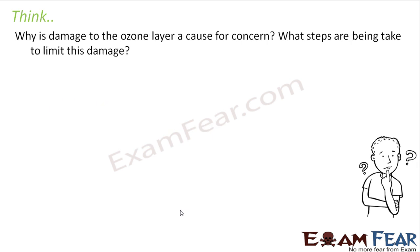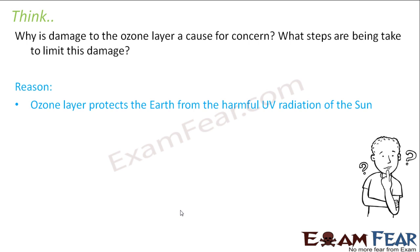Another question: why is damage to the ozone layer a cause for concern? The ozone layer is a protective layer which saves us from the ultraviolet radiation of the sun. If there is no ozone layer, all ultraviolet radiation is going to come to the earth and that is going to cause many diseases like skin cancer. It is going to adversely affect the health of not only living organisms but also plants. There will be no life on earth if all the ultraviolet rays start reaching the earth.